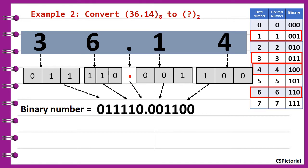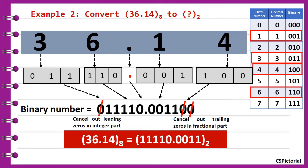So 36.14 in octal is equal to 11110.0011 in binary.